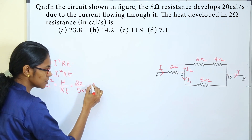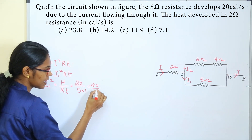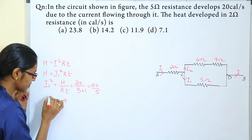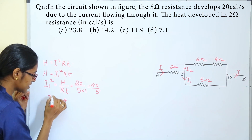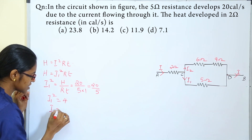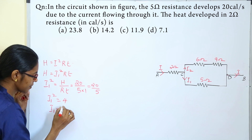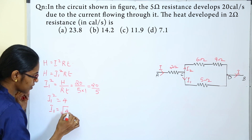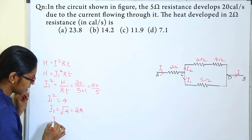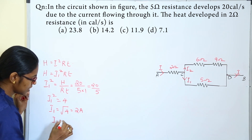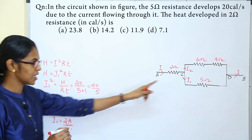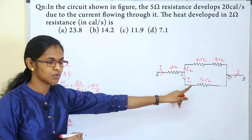That is equal to 20 divided by 5, which equals 4. So I1 squared is 4. Therefore, I1 is equal to the square root of 4, which equals 2 amperes. So I1 equals 2A.